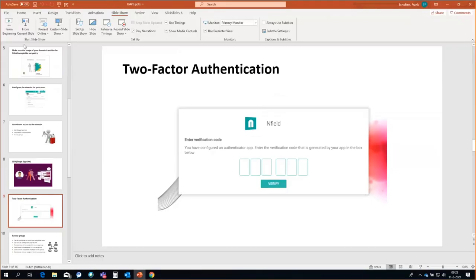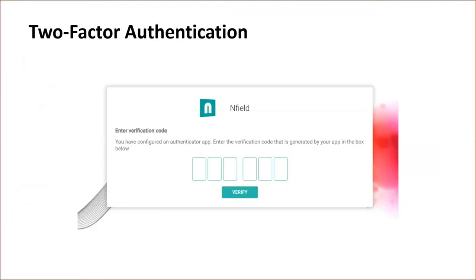Let's return to the presentation. Any questions about two-factor authentication? Yes — is it possible to use two-factor authentication in combination with single sign-on? The single sign-on takes care of the authentication, so that authentication is run by the single sign-on and no longer by Enfield. You can combine single sign-on and local accounts. So you can turn it on for the local accounts, but the single sign-on means that whatever is responsible for that single sign-on takes care of the authentication for the single sign-on users, not for the local users that you have created. So for those local users, you can still turn it on.